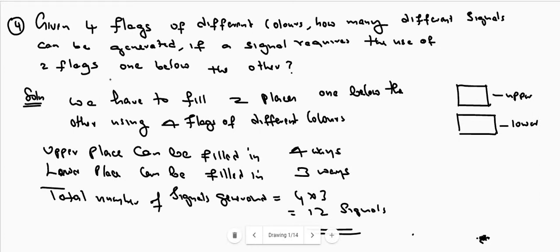Hi students, welcome back. Now we are going to discuss some more problems on Exercise Number 1: Fundamental Principle of Counting. If an event can happen in m ways, and following it another event can occur in n ways, then the total number of ways is equal to m into n.